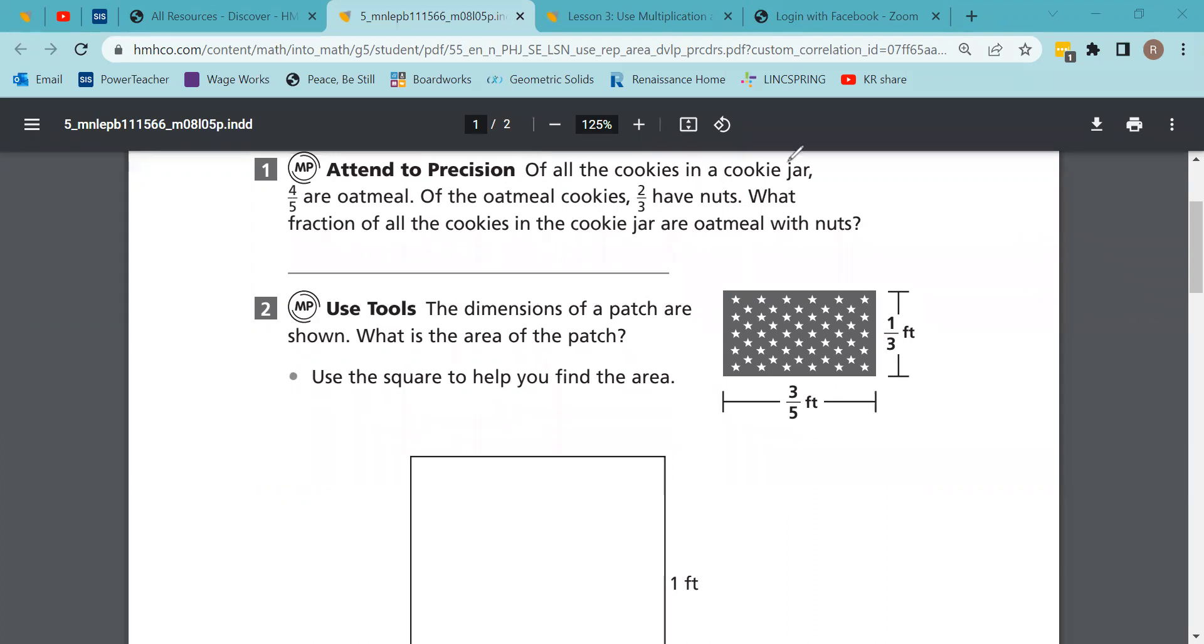Number one: Of all the cookies in a cookie jar, four-fifths are oatmeal. Of all the oatmeal cookies, two-thirds of them have nuts. What fraction of all the cookies are oatmeal with nuts? You've got four-fifths of two-thirds, or two-thirds of four-fifths - it ends up being the same thing. I don't believe we can cross cancel here, so it looks like we've got eight-fifteenths of the cookies.